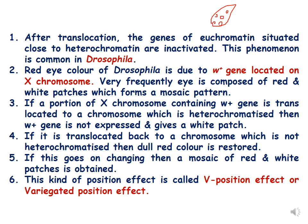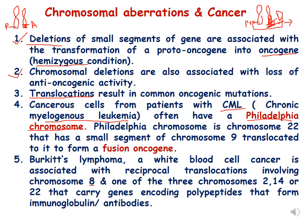If the W+ gene is translocated back to a chromosome that is not heterochromatized, the dull red color is restored. If this keeps changing back and forth, a mosaic of red and white patches is obtained. This kind of position effect is called V-position effect, or variegated position effect — where the function of the gene changes due to change in its position.